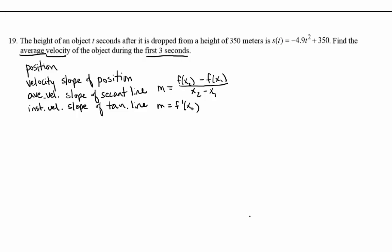So in this problem, it just says find the average velocity. You have to know that they're referring to the slope of a secant line, slope between two points. And what two points are we talking about? Zero and three, because it's the first three seconds.